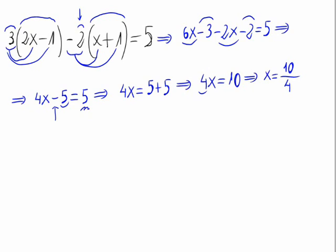Now, let's try to simplify this fraction. We can see we can divide everything by 2, so we would have 5 divided by 2. This is an irreducible fraction, so x is 5 halves.